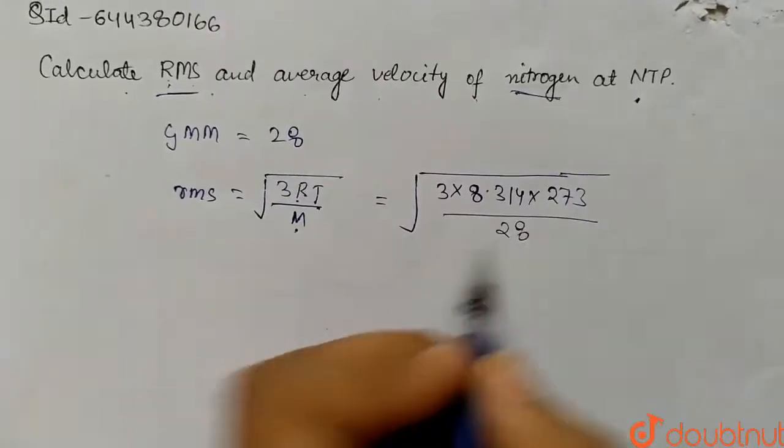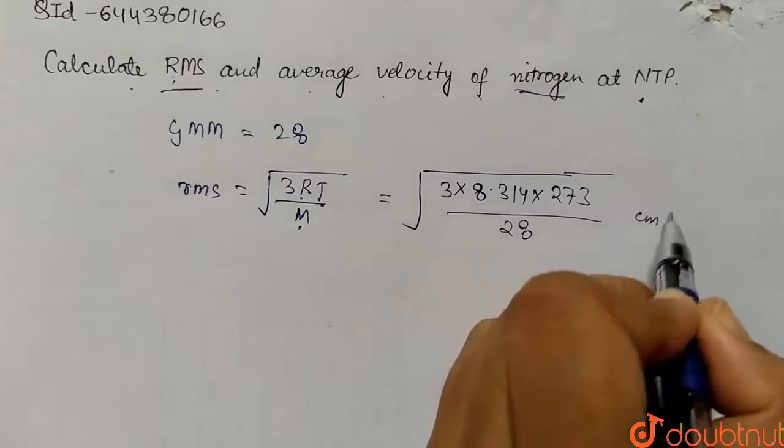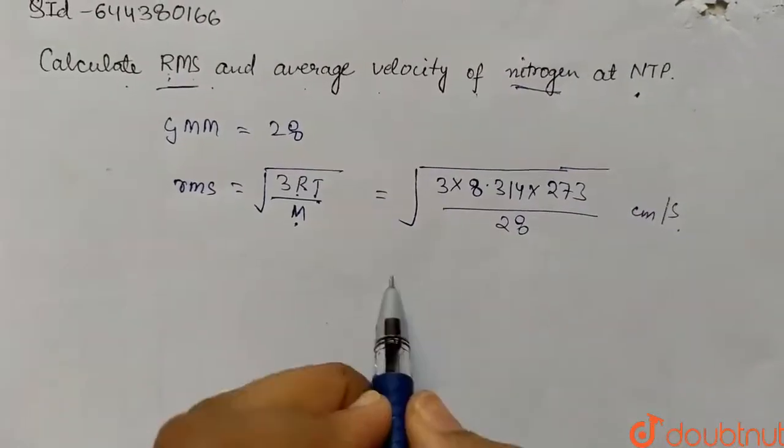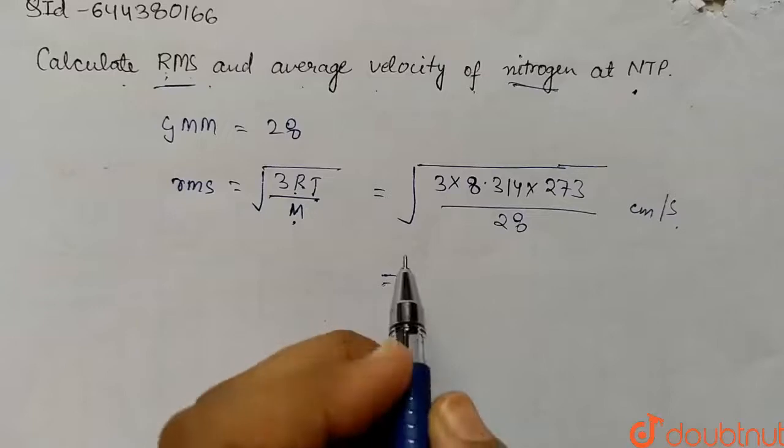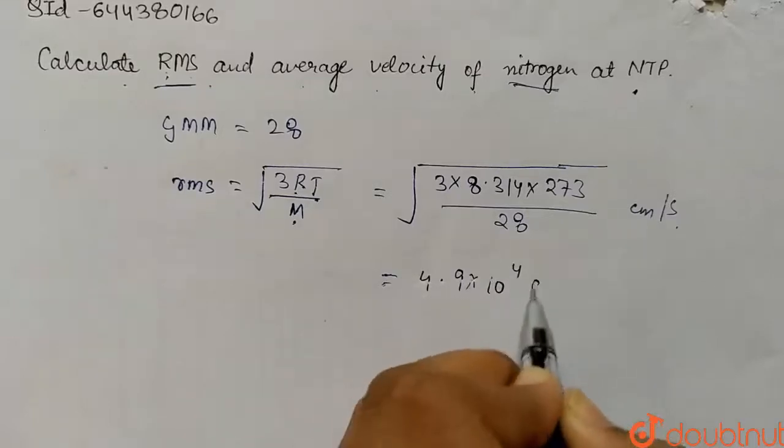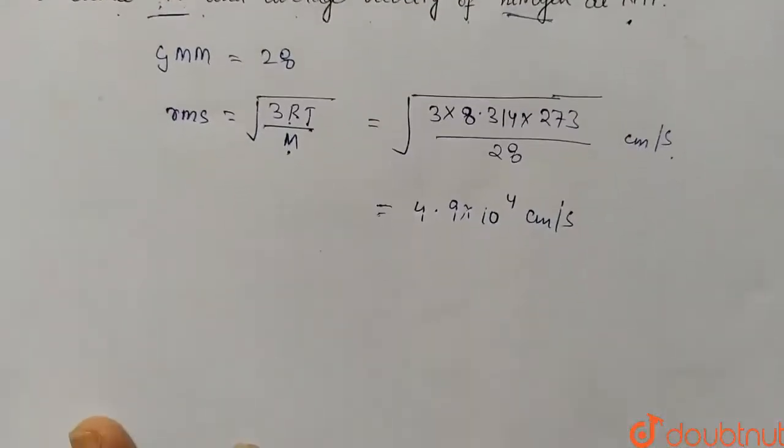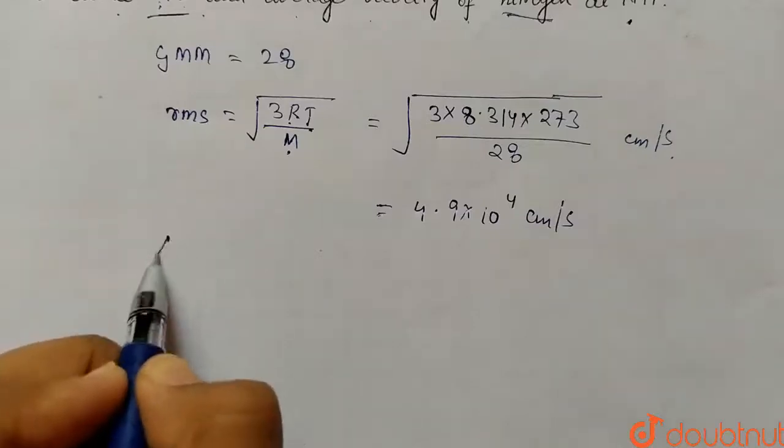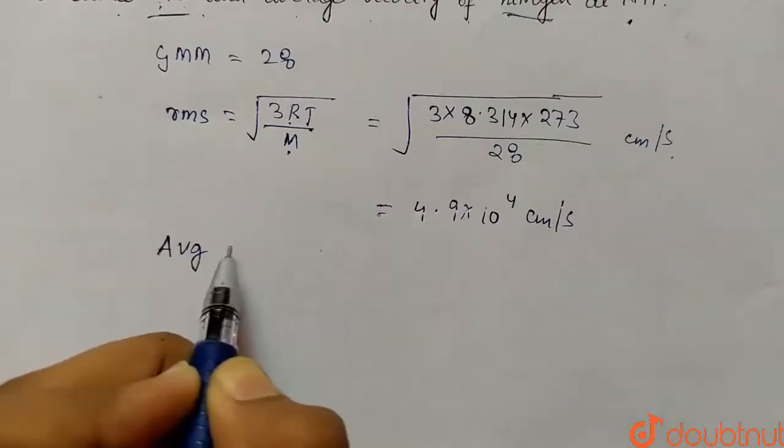This will come out to be centimeter per second. So here the value will be 4.9 into 10 to the power 4 centimeter per second. So this is our RMS value.